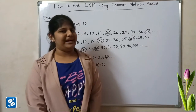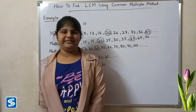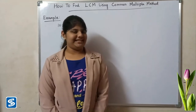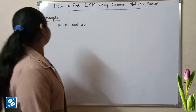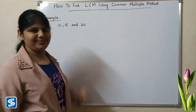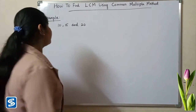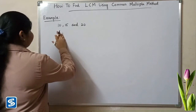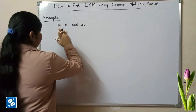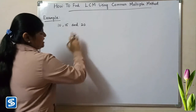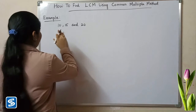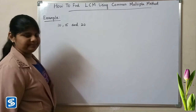So next we will take one more example. For example, we can take 10, 15, and 20. Now we have to find the multiples of 10, 15, and 20. First, we will find the multiples of 10.